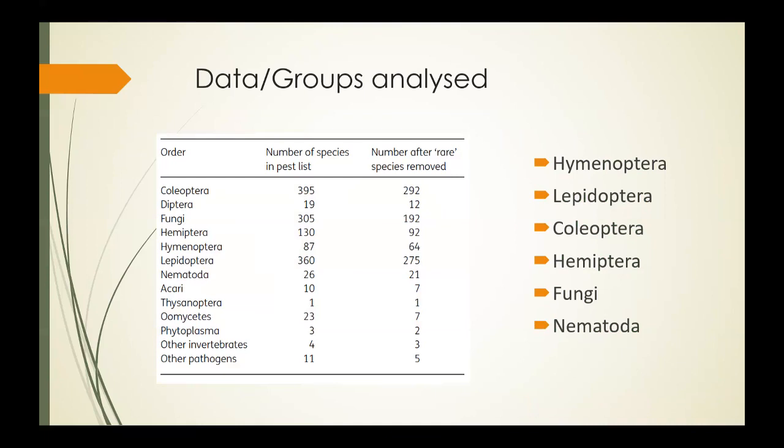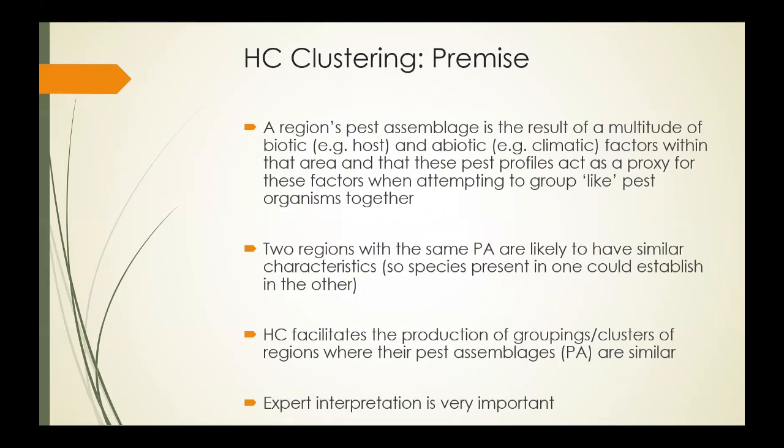Rare species were removed to eliminate potentially overly influential data points. A rare species was defined as one that occurred in less than six regions across the globe. I identified two different methods suitable for this type of analysis: hierarchical clustering and self-organizing maps. I'll just cover the former for this discussion.